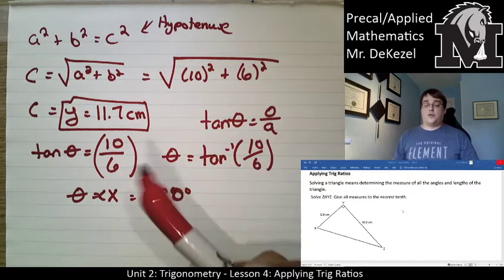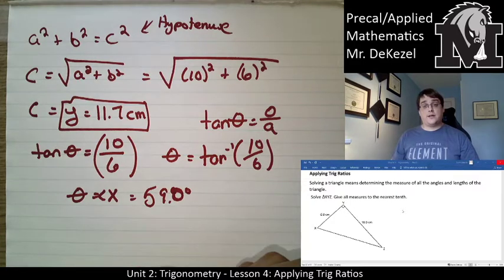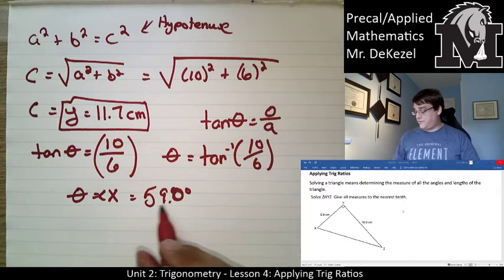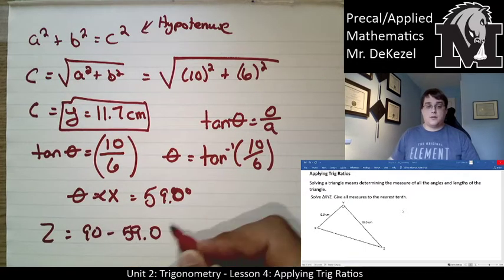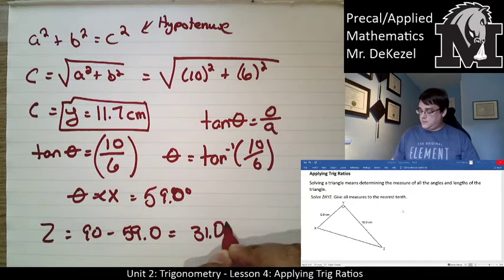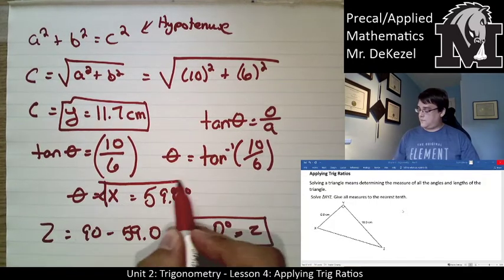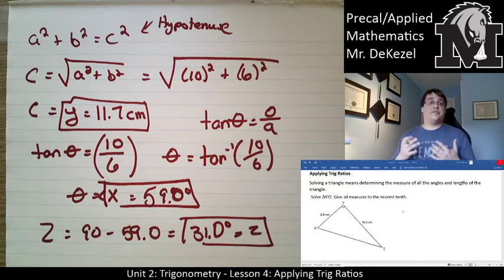And now, because we know two out of three angles in the triangle, we can find the other, because we know that all the angles in a triangle add up to 180 degrees. We have a right angle triangle, that means that the two remaining angles add up to 90. So to find the other angle Z, I can simply subtract 59 from 90. So Z is equal to 90 minus 59.0, and that equals 31.0 degrees for Z.